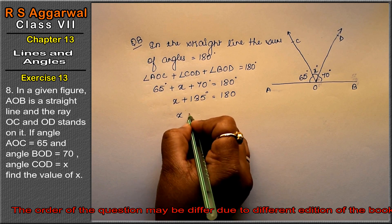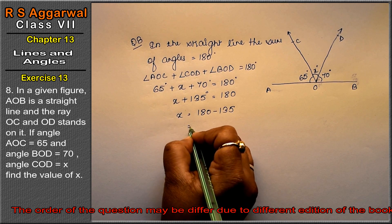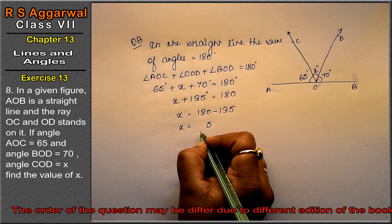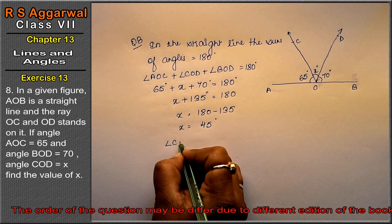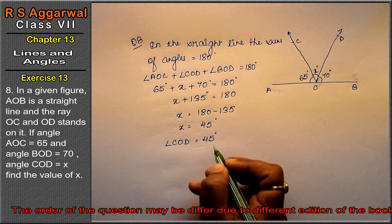Now 135 plus x equals 180 degrees. So x equals 180 minus 135. That is 45 degrees. So angle COD equals 45 degrees. The answer.